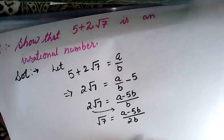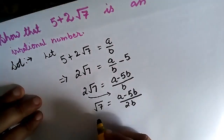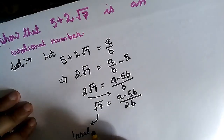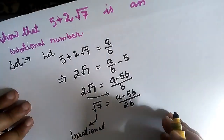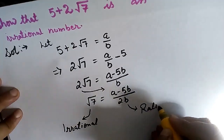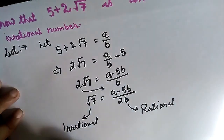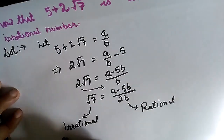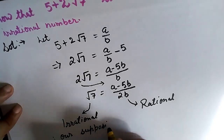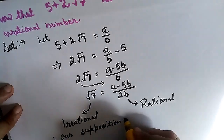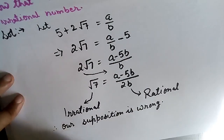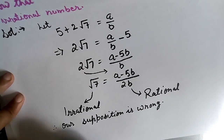In the previous question, we proved that the square root of a non-perfect square number is irrational — meaning √7 is irrational. But the right-hand side (a − 5b)/2b is in the form of p/q, so it would be a rational number. This means our supposition is wrong, and we can say that 5 + 2√7 is an irrational number.